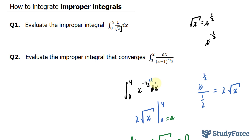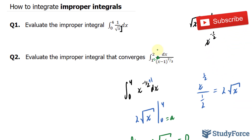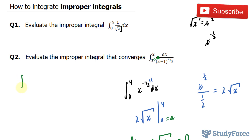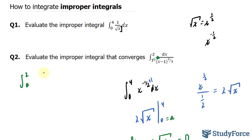What I have to do is set this one equal to a. I did this step later on in question one, but you can do it at the beginning or later — it doesn't matter. So I have the integral between a and two for the function one over x minus one to the power of two over three dx.